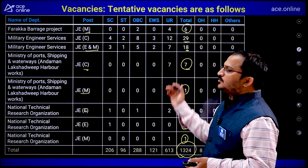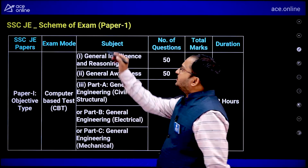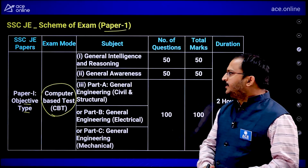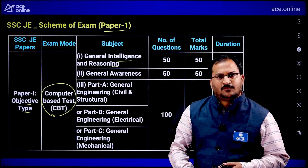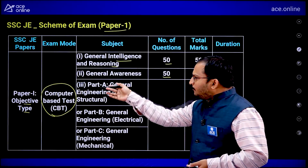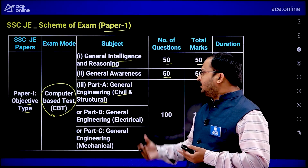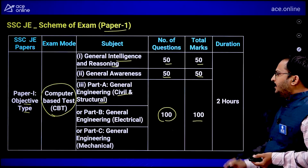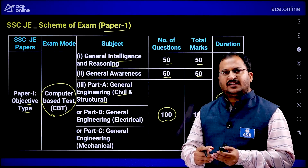Now let us see the scheme of examination. Paper 1 is an objective-type computer-based test (CBT). It has three parts: Part 1 — General Intelligence and Reasoning, 50 questions, 50 marks; Part 2 — General Awareness, 50 questions, 50 marks; Part 3 — Technical subject (Part A, B, or C depending on your discipline), 100 questions, 100 marks. Total: 200 questions, 200 marks, duration 2 hours. There is also a very important update regarding negative marking.